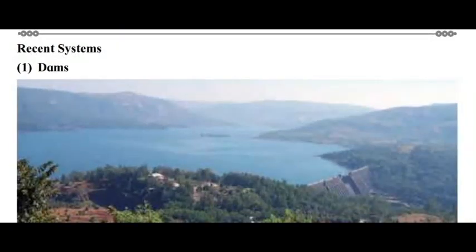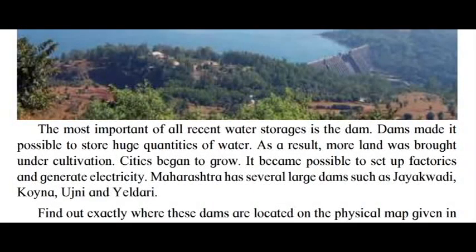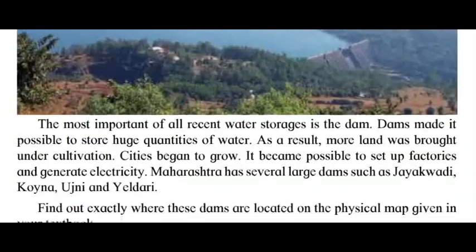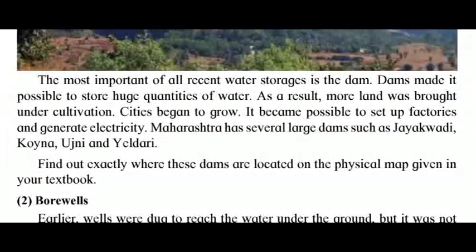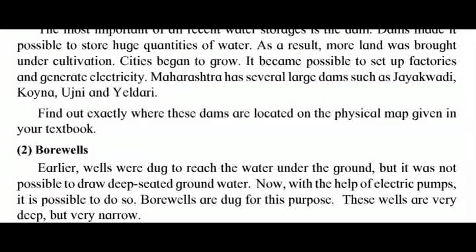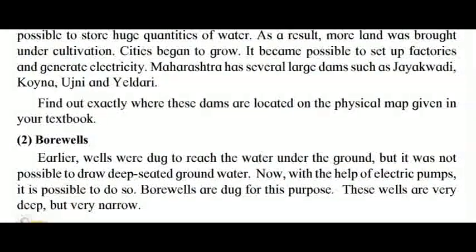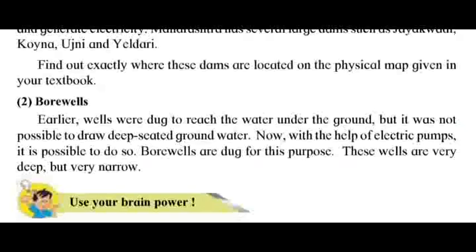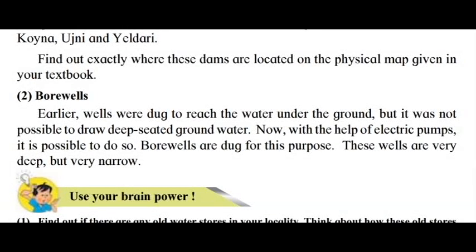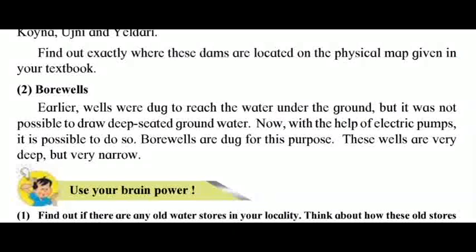Recent systems. One: Dams. The most important of all recent water storages is the dam. Dams made it possible to store huge quantities of water. As a result, more land was brought under cultivation, cities began to grow, and it became possible to set up factories and generate electricity. Maharashtra has several large dams such as Jayakwadi, Koyna, Ujni, and Yeldari. Find out exactly where these dams are located on the physical map given in your textbook.